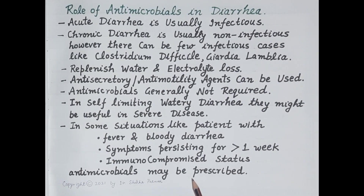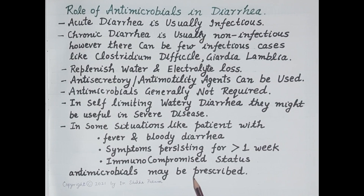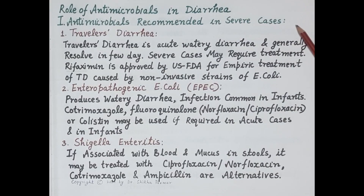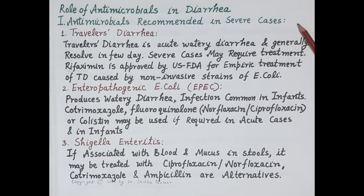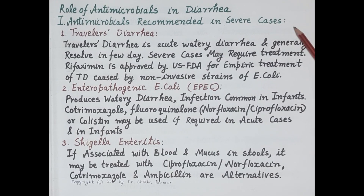We will discuss two categories of diarrheal cases. The first category includes self-limiting cases that normally do not require antimicrobials but where antimicrobials are prescribed in severe disease. The second category includes cases where antimicrobials are usually prescribed regularly. Let's first discuss cases where antibiotics are required in severe cases.